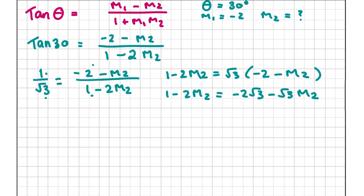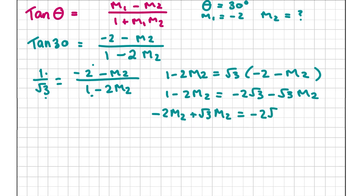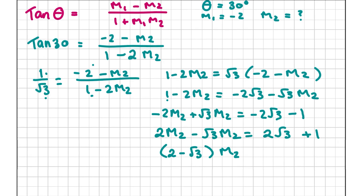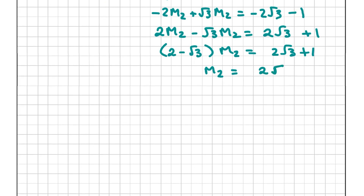Now we bring all the M2 terms to the left-hand side: -2M2 + √3·M2 = -2√3 - 1. The majority of values are negative, so I'll change signs throughout: 2M2 - √3·M2 = 2√3 + 1. Factoring the left side: M2(2 - √3) = 2√3 + 1, so M2 = (2√3 + 1) / (2 - √3).